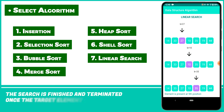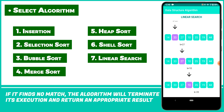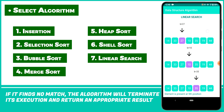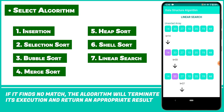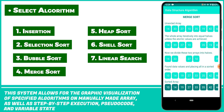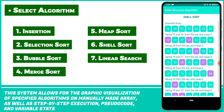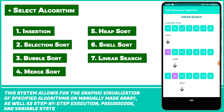The search is finished and terminated once the target element is located. If it finds no match, the algorithm will terminate its execution and return an appropriate result. This system allows for the graphic visualization of specified algorithms on a manually made array, as well as step-by-step execution, pseudocode, and variable state.